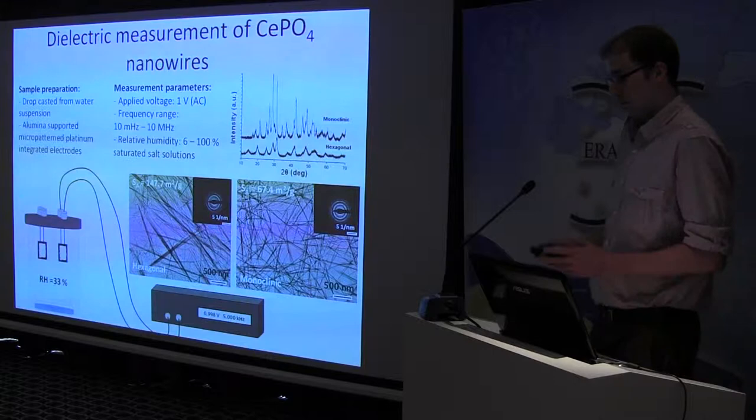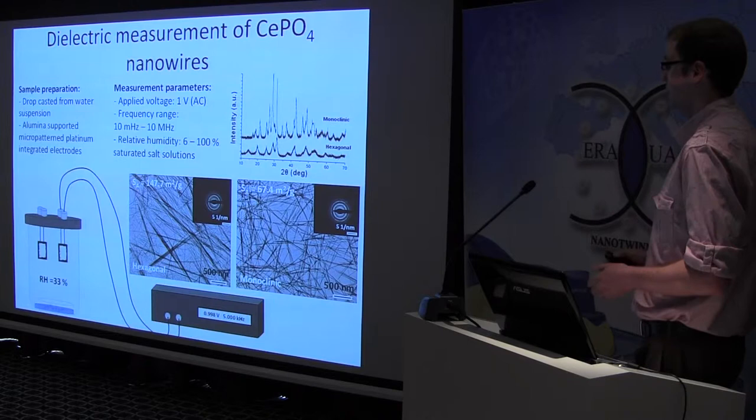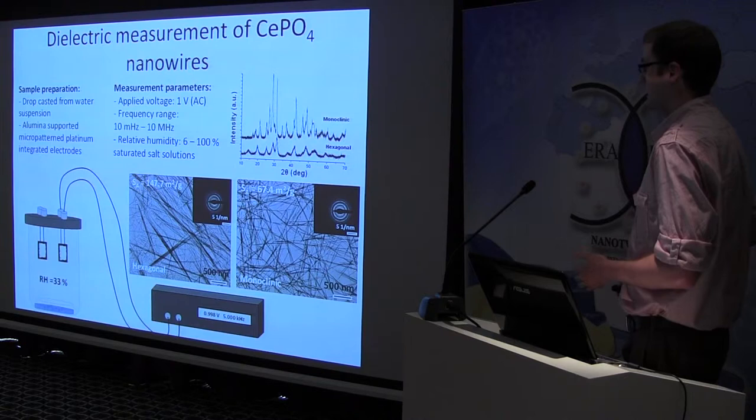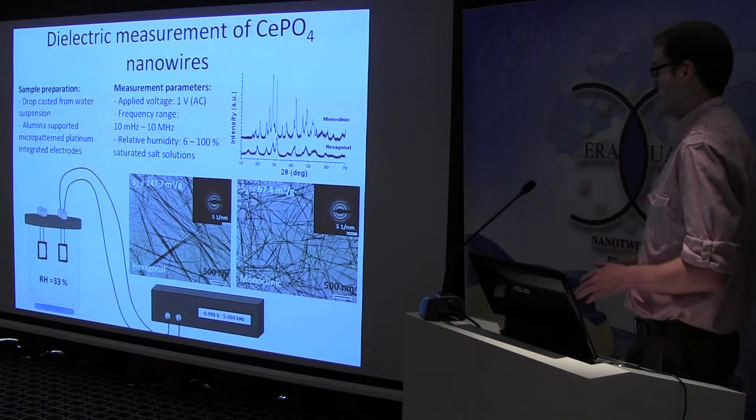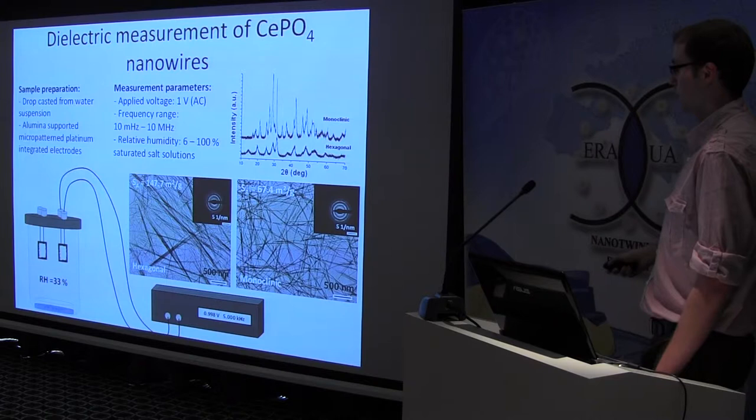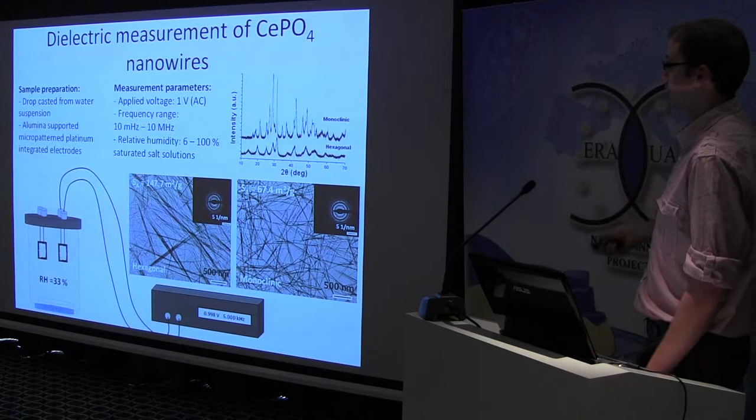So, when we started to measure our samples, we used two different kinds of material, which was the same because it was cerium phosphate, but they had different kinds of crystal structure. One is the hexagonal one, and the other one was the monoclinic one. It was proved by XRD study also.